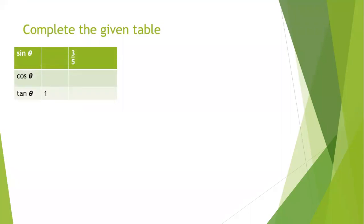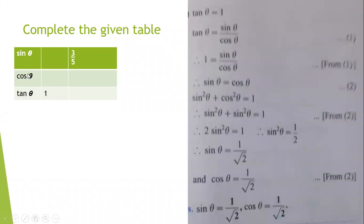Complete the given table. In this table you can see tan theta is one. They have given us tan theta as one and we need to find sin theta and cos theta. And here they have given us sin theta as three upon five and we need to find cos theta and tan theta. So in the first one they have given us tan theta equal to one. We will write first tan theta equal to one. Then the formula of tan theta is tan theta equal to sin theta upon cos theta — we will number this as one.